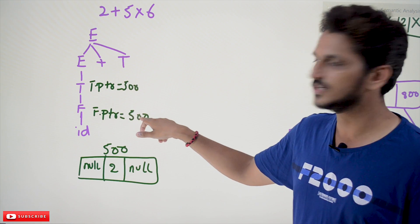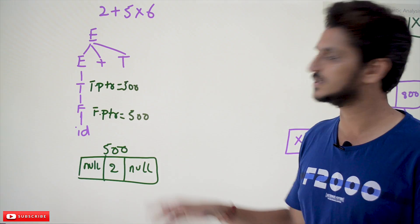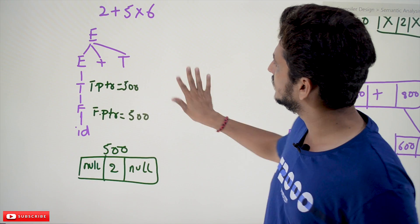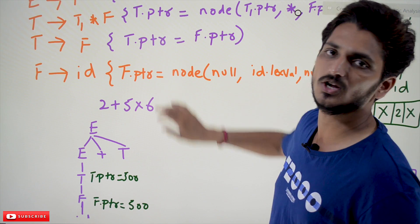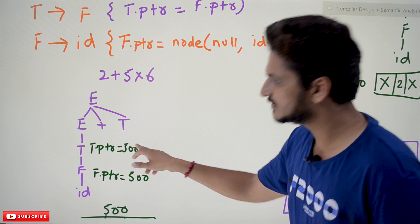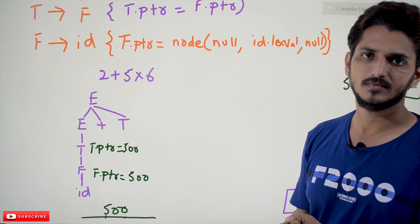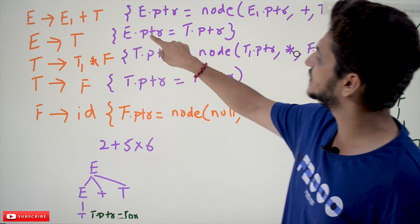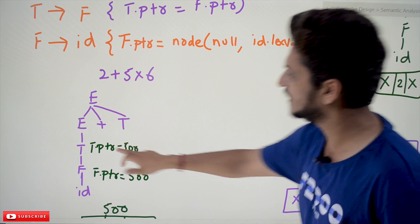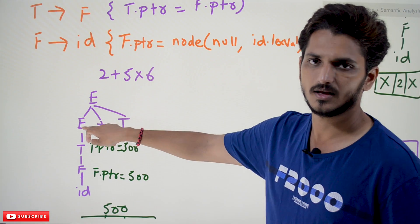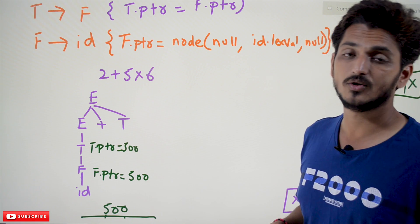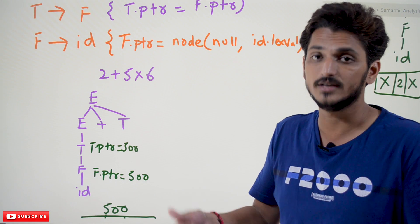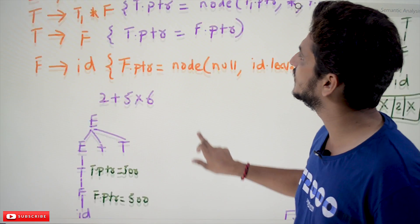This value 500 is placed in F.ptr — that is why we use the attribute ptr to save the address. Whenever T → F completes, the semantic condition is: F.ptr is assigned to T.ptr. So T.ptr equals 500. Whenever E → T finishes, T.ptr is assigned to E.ptr. In this way, when we reach the E + T rule, we have both left and right node addresses, create a new node, and assign left and right accordingly.